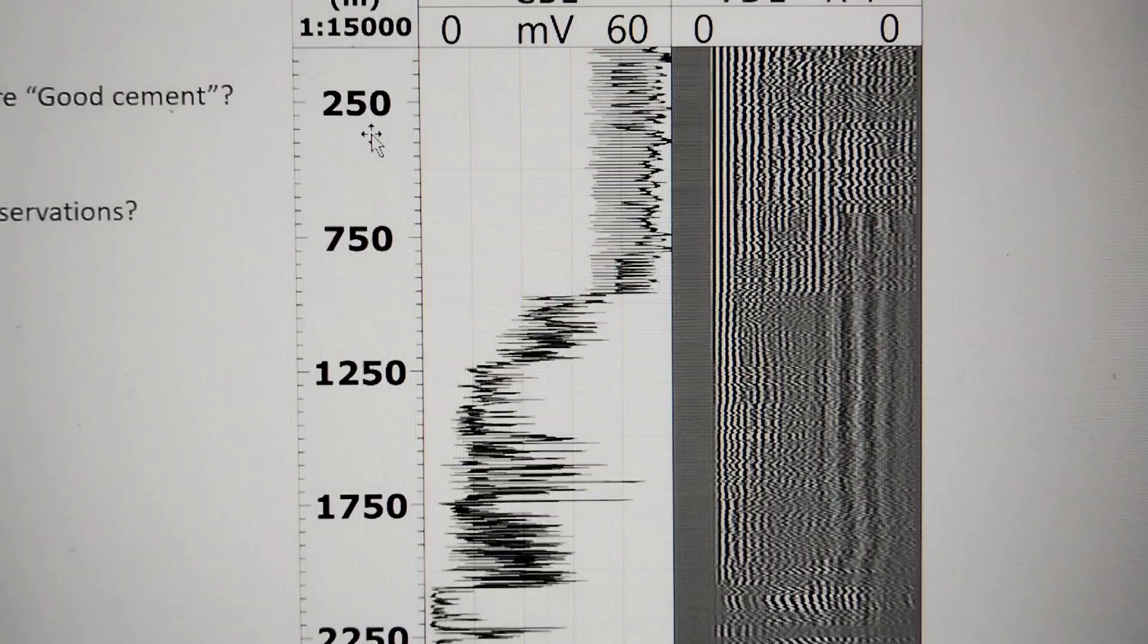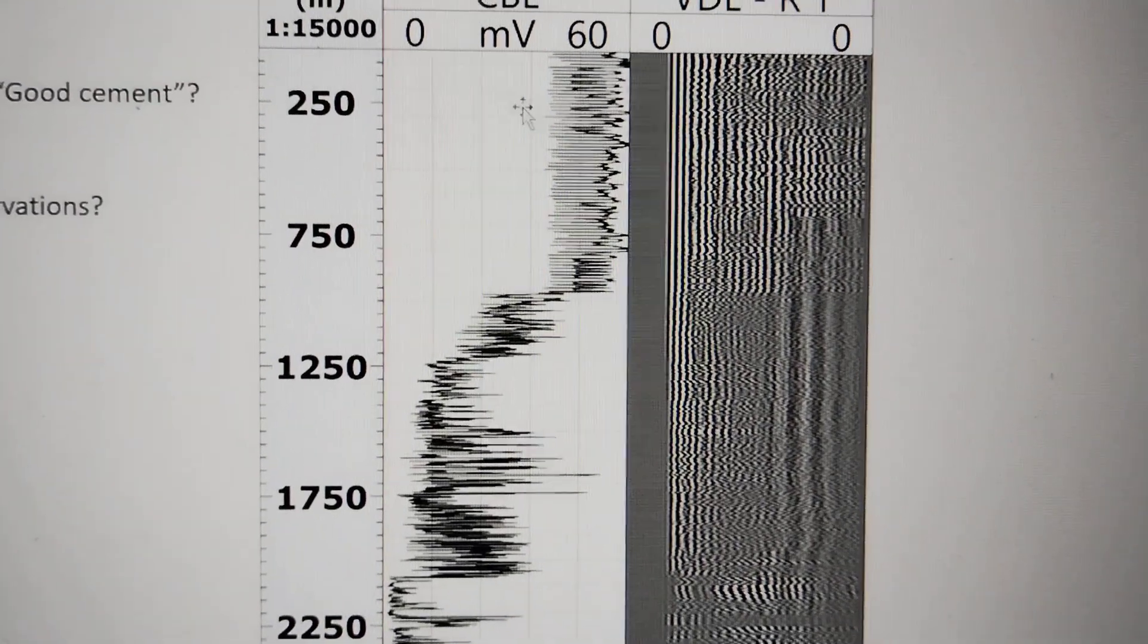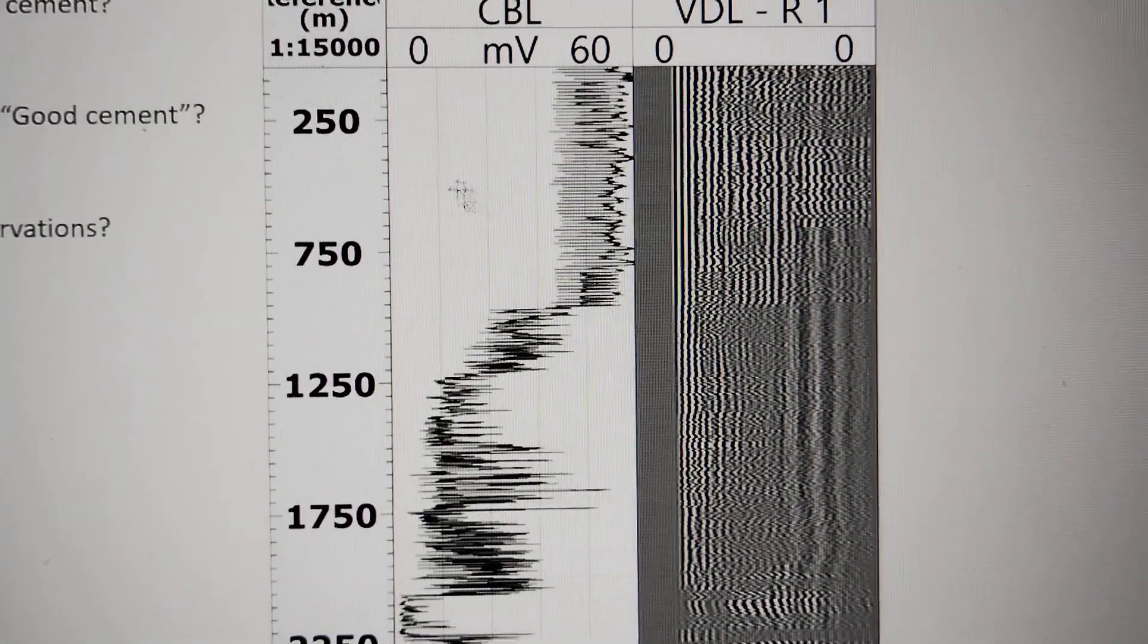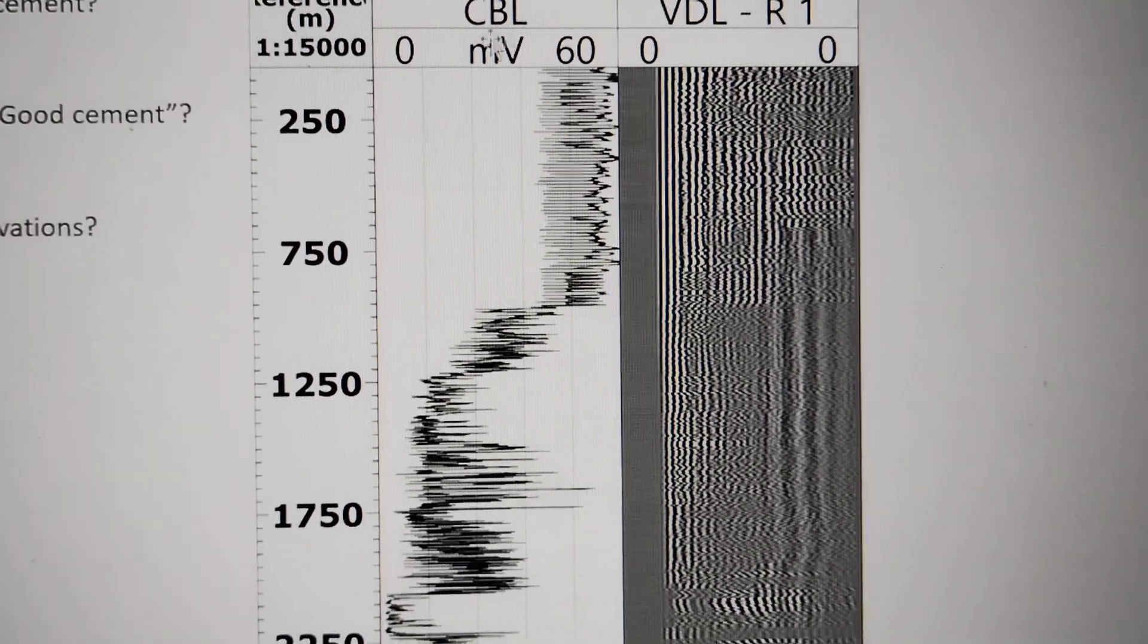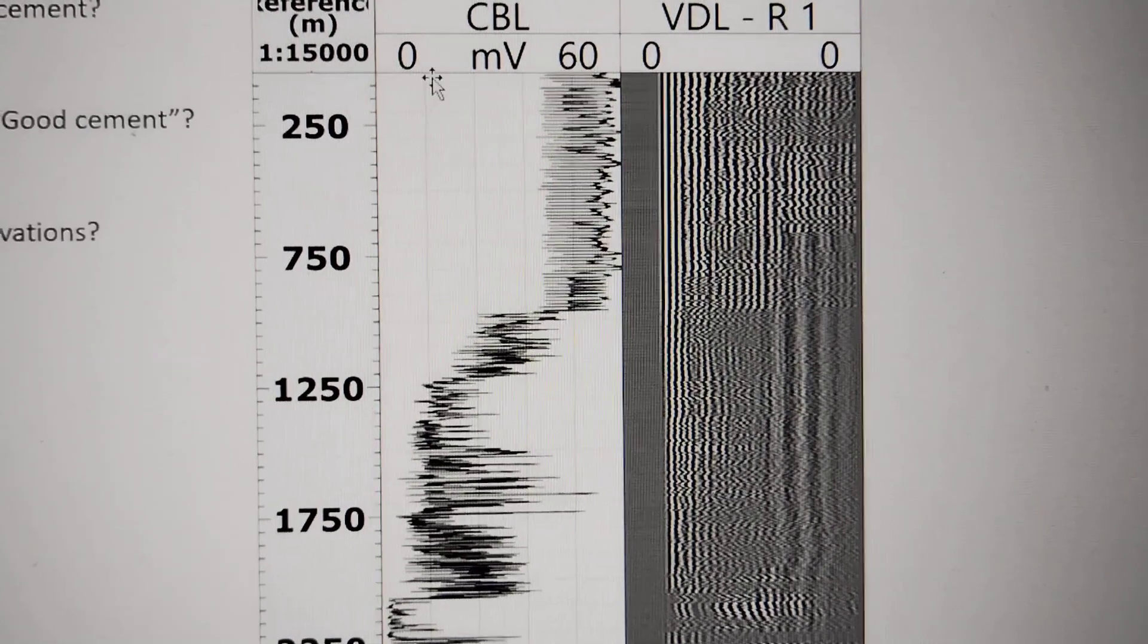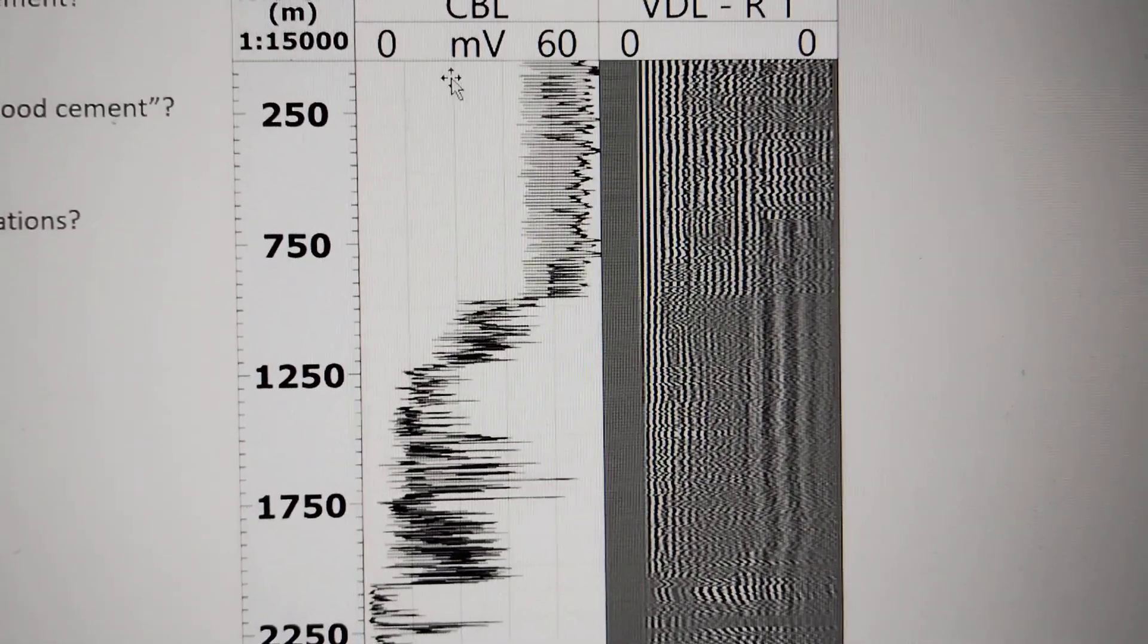First, where is the top of cement? To answer this question, you can see the CBL here. The CBL scale ranges from 0 to 60 millivolts.